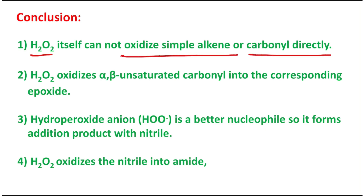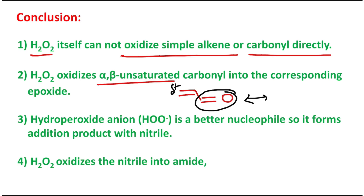In conclusion, hydrogen peroxide itself cannot oxidize a simple alkene or carbonyl directly, because the alkene is electron-rich and hydrogen peroxide is also electron-rich — so that is not possible. However, hydrogen peroxide can oxidize an alkene to the corresponding epoxide when the alkene is alpha-beta unsaturated. In that case, because of the canonical form, the beta carbon has some positive charge density due to conjugation with the carbonyl group, making that double bond relatively electron-deficient.